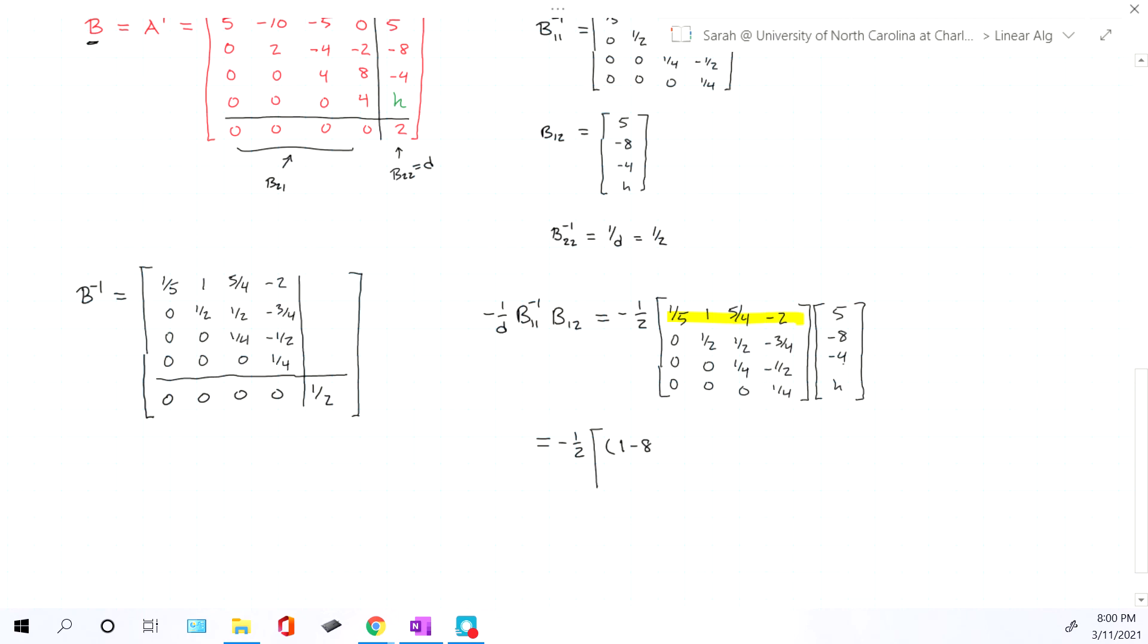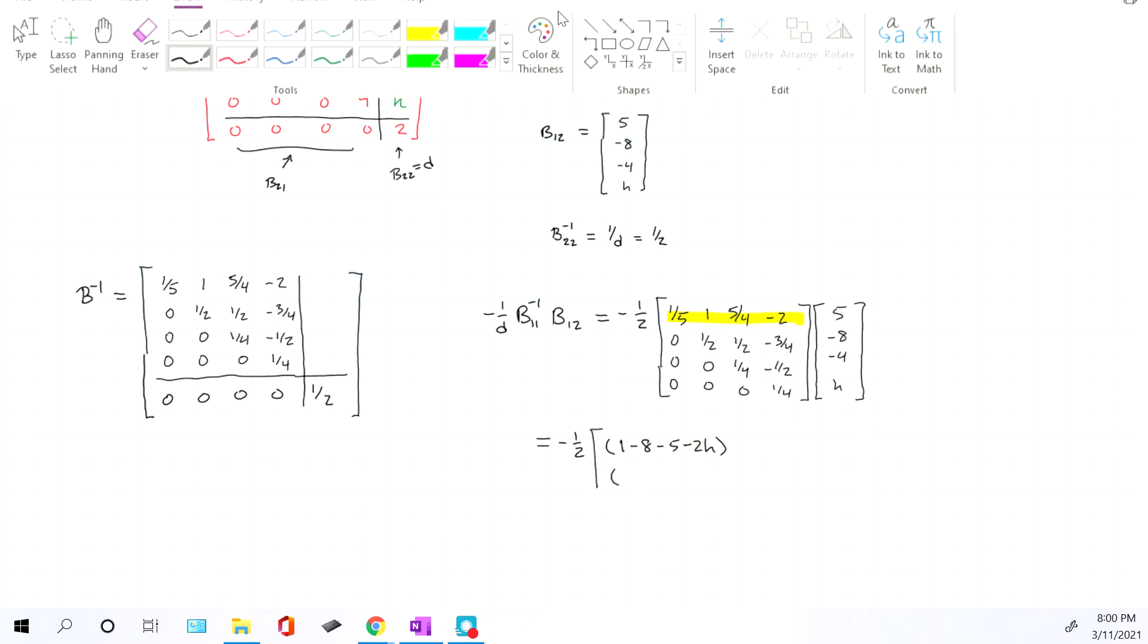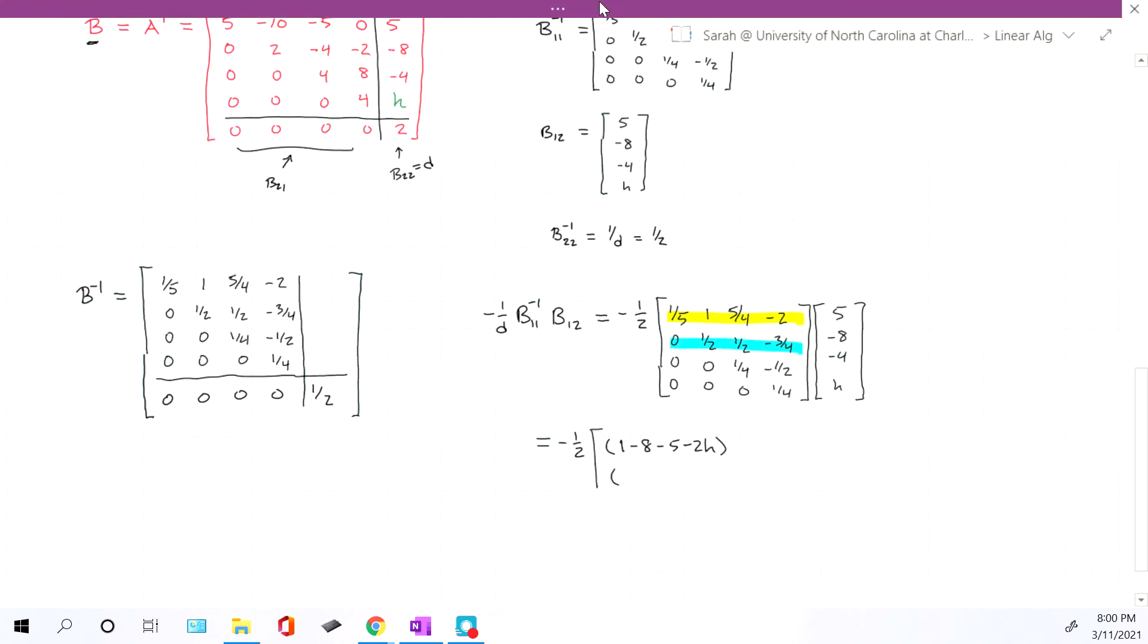Then we'll repeat the exact same process for each of the next rows. The next row will multiply by the column, 0 times anything is 0, 1 half by negative 8 is negative 4, 1 half by negative 4 is negative 2, and then we'll get negative 3 fourths h. Then we'll look at our next row in this matrix. So we multiply that next row by the column matrix, and we'll have 0 times 5 is 0, 0 times negative 8 is 0, 1 fourth times negative 4 is negative 1, and then negative 1 half h. And then the last thing we'll have is the unhighlighted row times the column. The three zeros will zero out, and we'll simply have 1 fourth h.